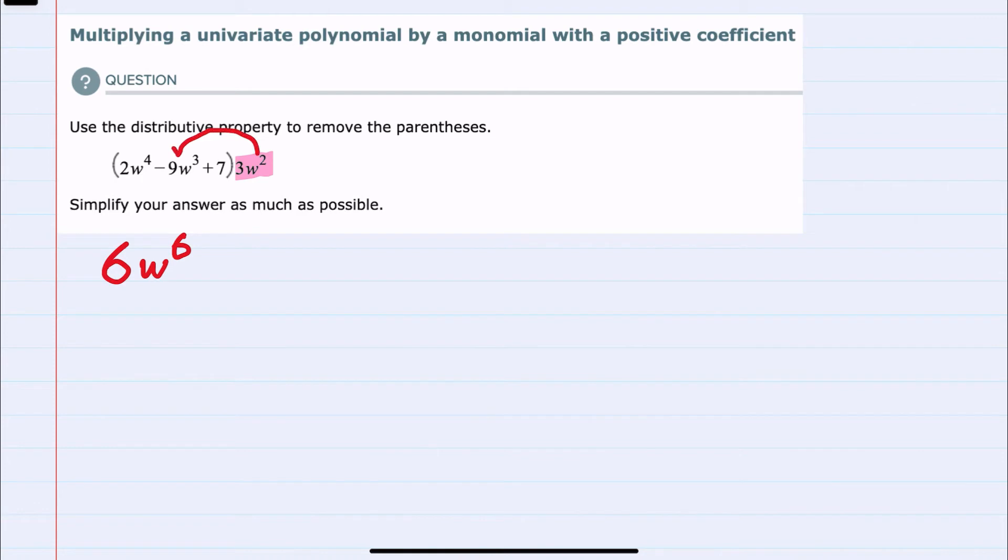Moving on to multiplying the second term, looking at the coefficients, we have minus 9 times 3. That gives us minus 27, just multiplying coefficients. Then for the w's, we have the same variable being multiplied. That means we add the exponents. The 3 plus the 2 gives me 5.